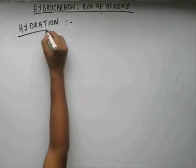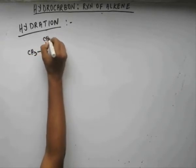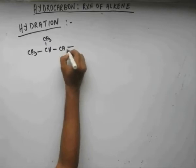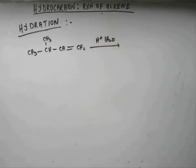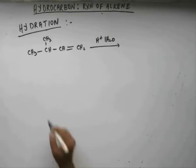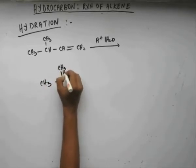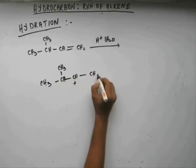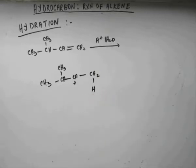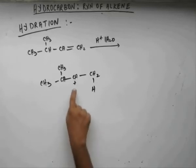Now suppose I have this substrate and I want to carry out a hydration reaction on it. Get your product quickly before we go for further discussion — give your product, what you think the major product would be. Step one would be the RDS. H+ would come and get attached to a carbon in such a manner that the carbocation formed is the most stable possible of the two carbons.